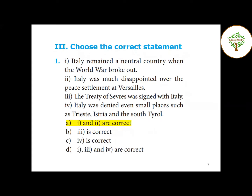Third Roman: Choose the correct statement. First question — Italy remained a neutral country when the war broke out. This statement is correct. Italy was much disappointed over the peace settlement at Versailles — this statement is also correct. The Treaty of Sèvres was signed with Italy — this is wrong; it was signed with Turkey. Italy was denied even small places such as Trieste, Istria, and the South Tyrol — this statement is wrong. So for this question, statements one and two are correct.